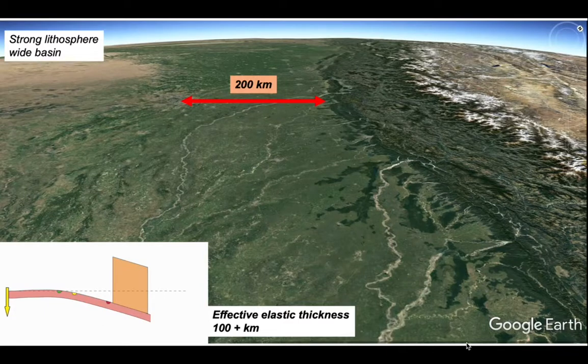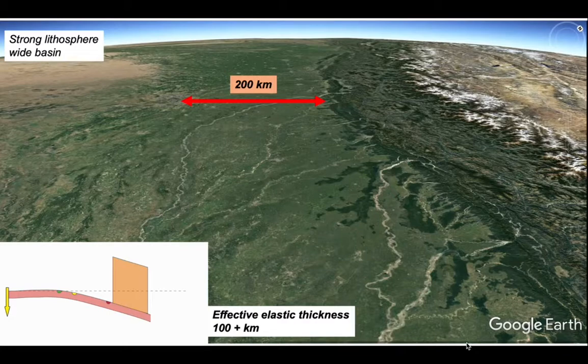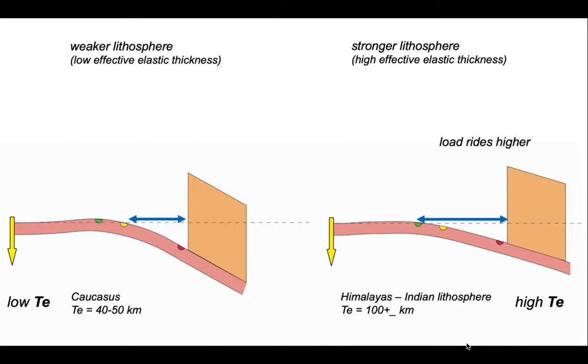And of course, the orogenic load sits high in the Himalayas with peaks rising to over 8 kilometers high in contrast to the Caucasus. So we can compare our two cases. A low effective elastic thickness of maybe 40 or 50 kilometers for the lithosphere adjacent to the Caucasus generates a narrow foreland basin. Strong lithosphere in the situation of the Indian lithosphere adjacent to the Himalayas has a high effective elastic thickness and a correspondingly wide foreland basin and high mountains because the load is riding higher.